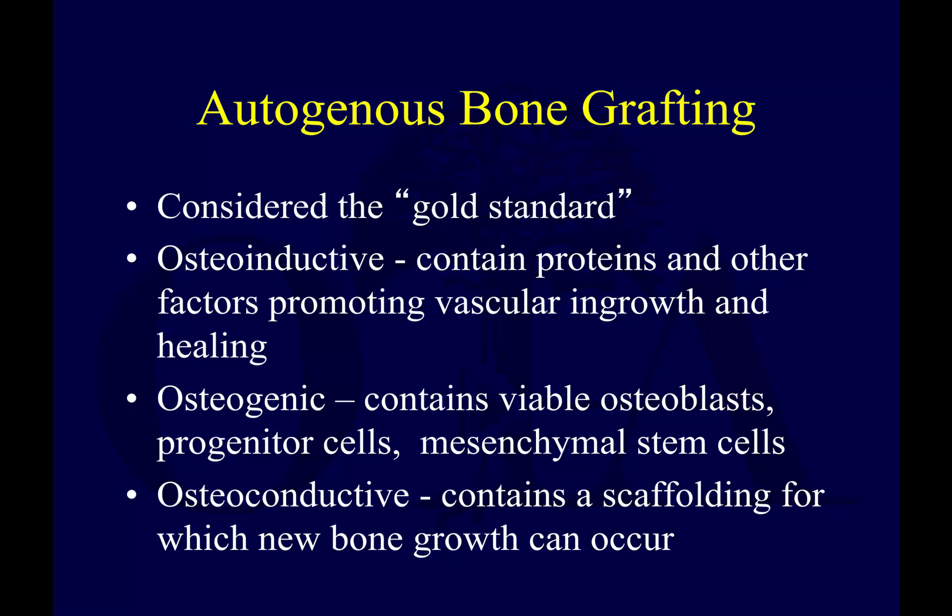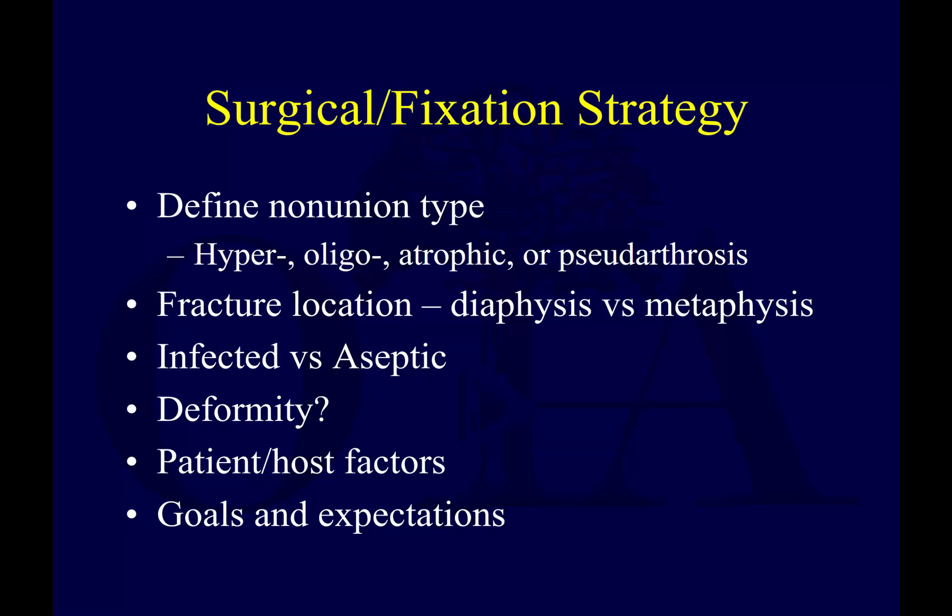Autogenous bone grafting is considered the gold standard, though the supporting data is not ironclad. It's osteoinductive because it contains BMPs and other proteins at a physiologic dose — unlike recombinant human BMP-2, which is given at super-physiologic doses. It's osteogenic if some cells survive the transplant, and osteoconductive because actual bone is included. So it has all three factors. There is a separate lecture on bone grafting available for deeper exploration of this topic.